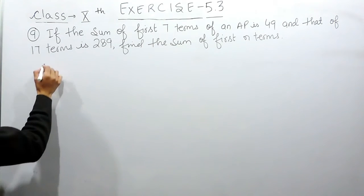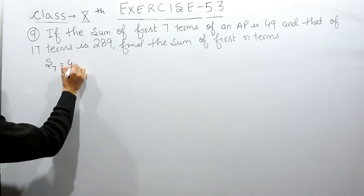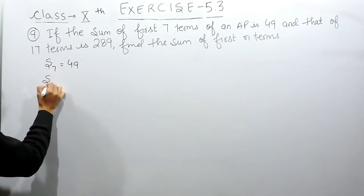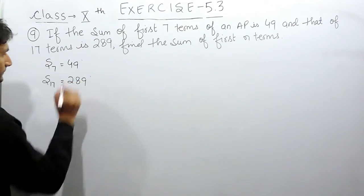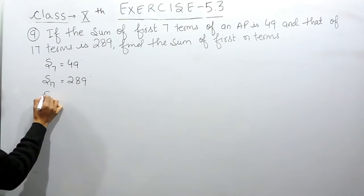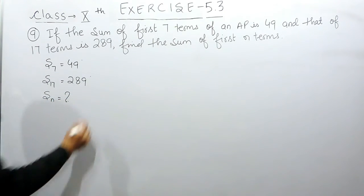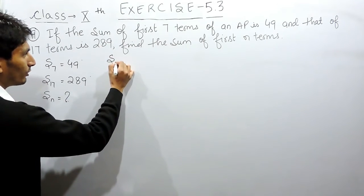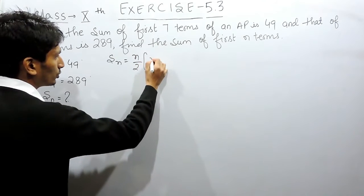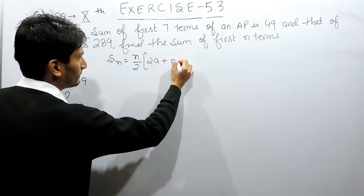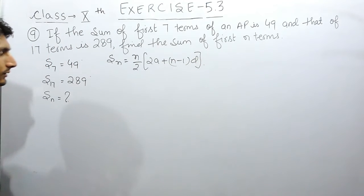In this case, the sum of 7 terms is given as 49 and the sum of 17 terms is given as 289. We have to find the sum of N terms. To find the sum of N terms, we use the formula: Sn = N/2 multiplied by (2A plus (N minus 1) into D). This is the formula to find the sum of N terms.